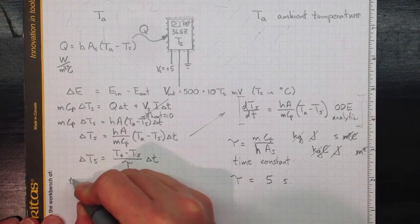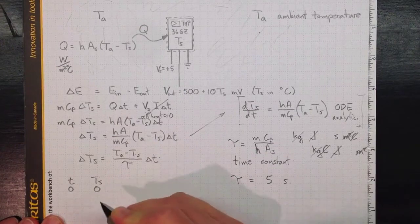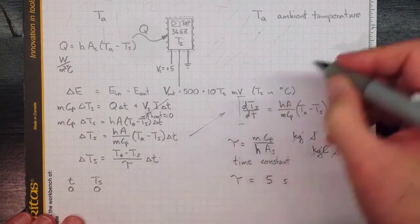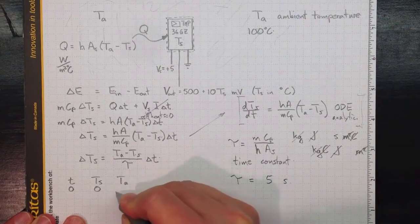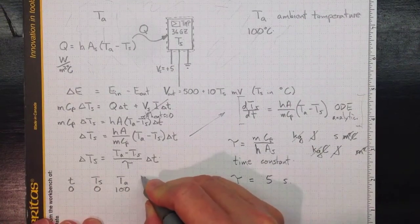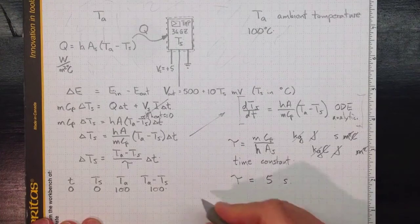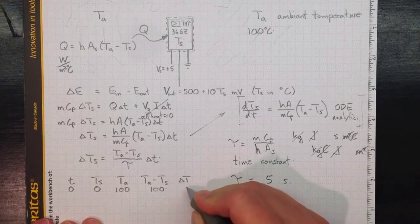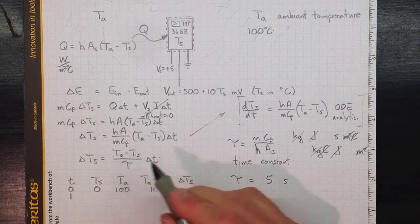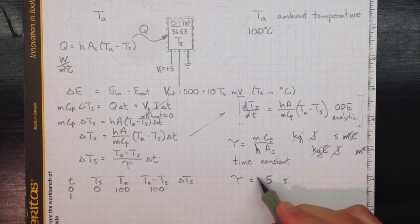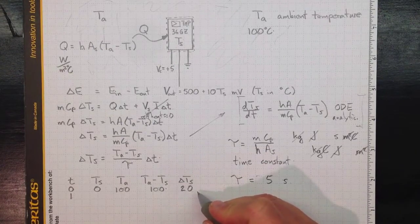If we looked at different times, so at time T equals zero, let's suppose the sensor was at zero degrees Celsius. And the ambient, let's suppose it was boiling water at a hundred degrees Celsius. Then T ambient, minus T sensor, would be a hundred. And delta TS, for a one second delta T, so that's just one. Delta TS would be a hundred divided by tau, a hundred divided by five, is twenty. So the sensor temperature would increase by twenty degrees C in the first second.